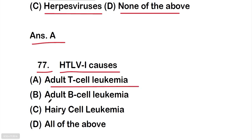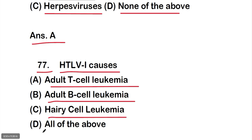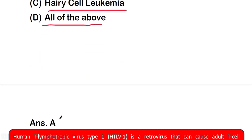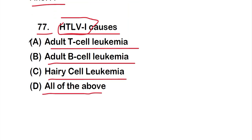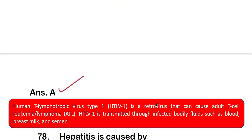Question number 77: HTLV-1 causes — option A: adult T-cell leukemia, option B: adult B-cell leukemia, option C: hairy cell leukemia, or option D: all of the above. The correct answer is option A, adult T-cell leukemia. Human T-lymphotropic virus type 1 (HTLV-1) is a retrovirus that can cause adult T-cell leukemia or lymphoma, transmitted through infected bodily fluids such as blood, breast milk, and semen.